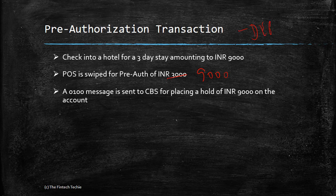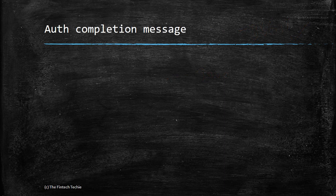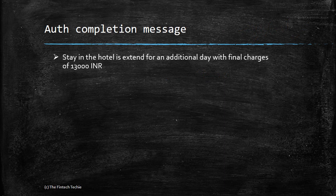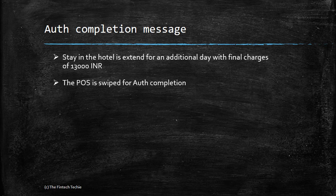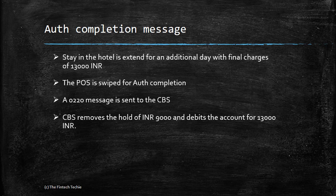When you check out — say after an additional fourth day — the final charges come to 13000 rupees, including extra stay, laundry, and other charges. The receptionist swipes again, this time using the auth completion code. A 0220 message goes to CBS, which removes the hold of 9000 and debits the account for 13000. This completes the auth completion. It is a dual message system: the first message (0100) places the block, and the second message (0220) removes the block and posts the accounting entries.